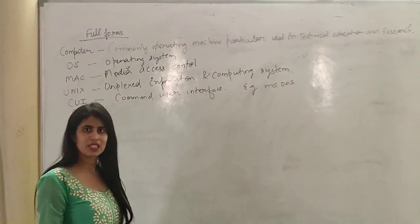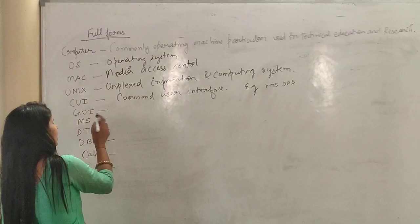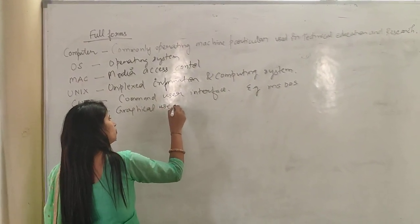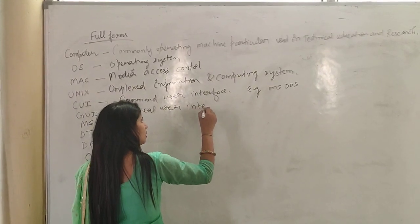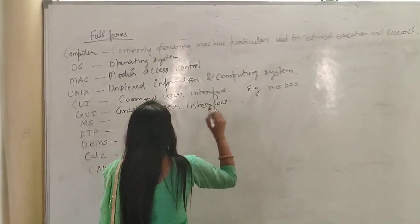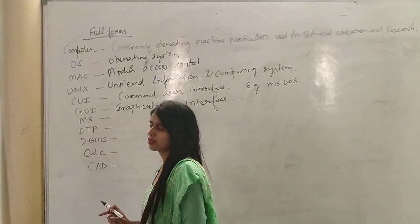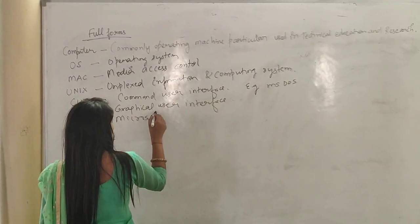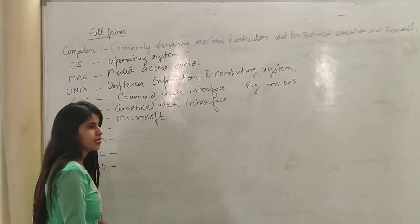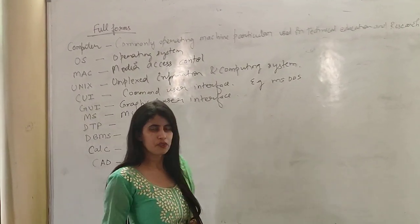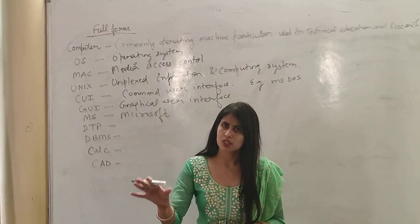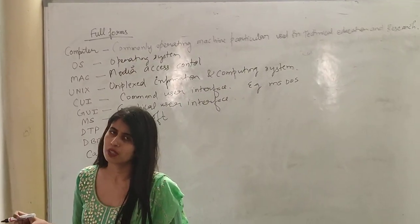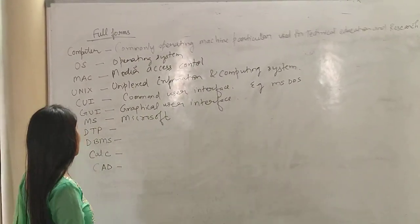CUI runs with the help of commands only. Next is GUI. GUI stands for Graphical User Interface. Next is MS — MS stands for Microsoft. It is a part of MS Office. MS Office has various parts: MS PowerPoint, MS Excel, MS Paint, MS Outlook. These all are the parts of MS.